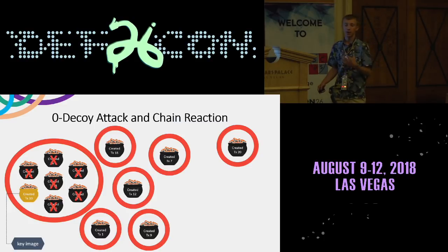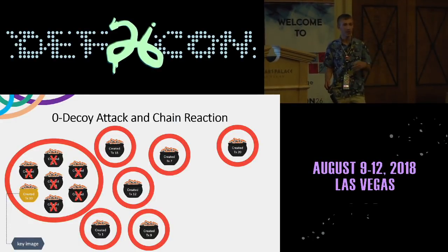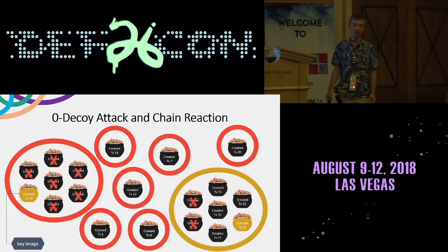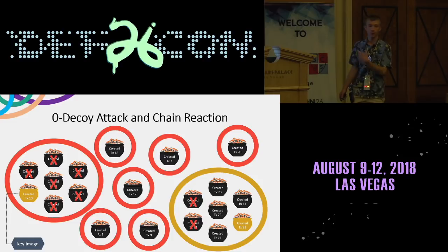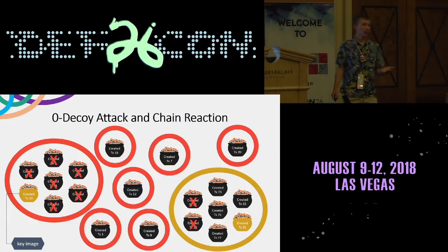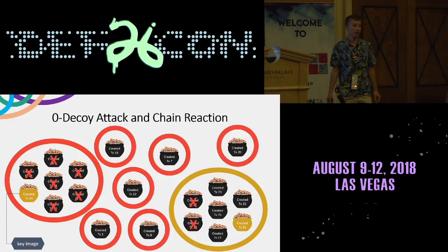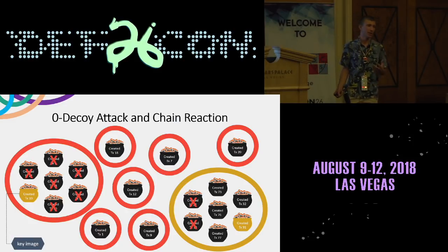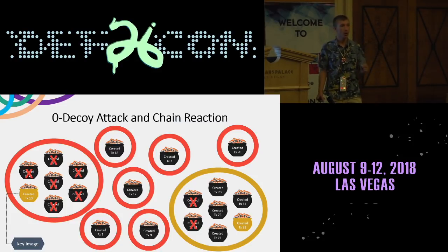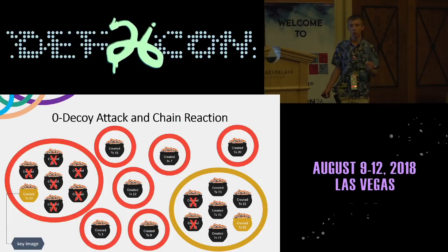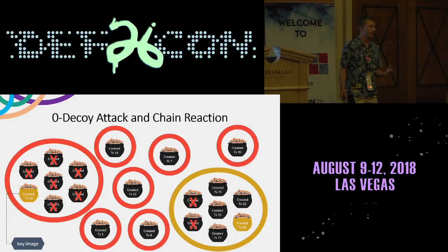This is where the chain reaction effect comes in. Even though your transaction used a ring signature, if your ring was compromised it negatively impacts other transactions that include your output in their ring. Since your output is known to be spent, it is a known decoy for any other ring that selected it. This mechanism attributes outputs as known-spent in order to ultimately break down ring signatures and reveal what real output is actually being spent.